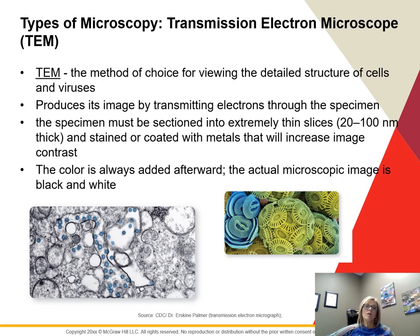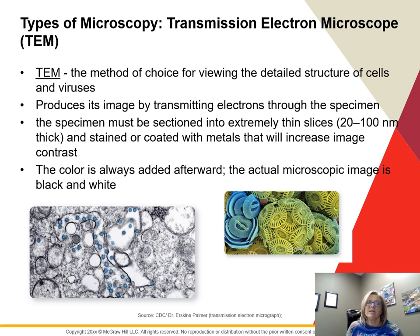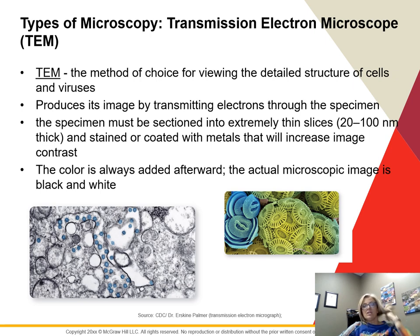The transmission electron microscope, or TEM, allows us to see very small things like detailed cell structures and viruses. It works by transmitting electrons through the specimen. Because electrons don't pass easily through thick material, the specimen must be sectioned into very thin slices — similar to an MRI. Specimens can be stained or coated with metals to increase contrast. In a TEM micrograph, darker areas represent thicker or denser parts while lighter areas are more transparent and less dense.